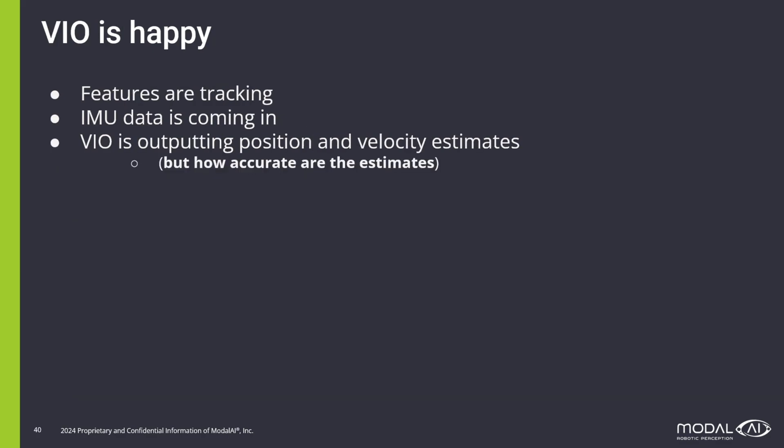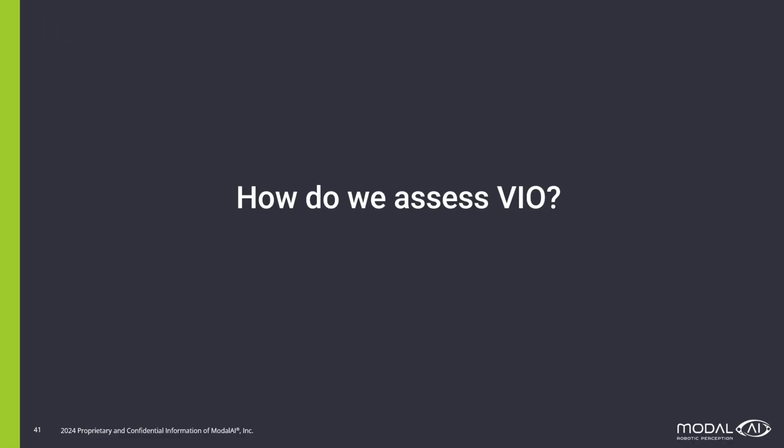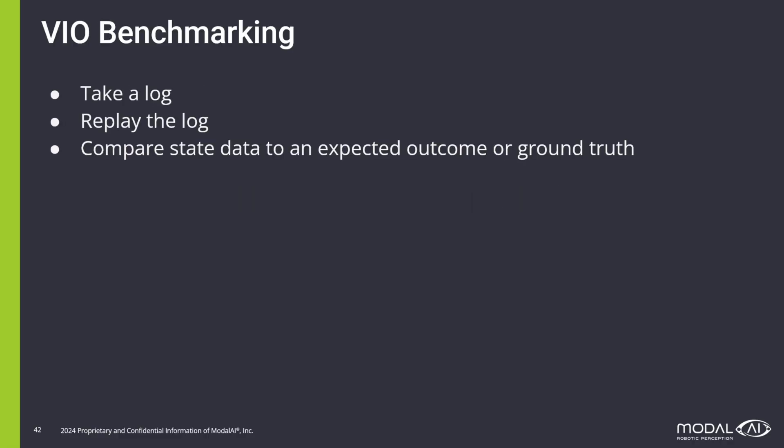Once features are being tracked and IMU data is coming in, VIO is happy and will output position and velocity estimates. But we want to know how accurate and robust these estimates are — in other words, how do we assess VIO? We do that by benchmarking, which consists of recording a flight log and then replaying the flight log offline while VIO is running, and then collecting that replay data and comparing it to an expected outcome or a ground truth.